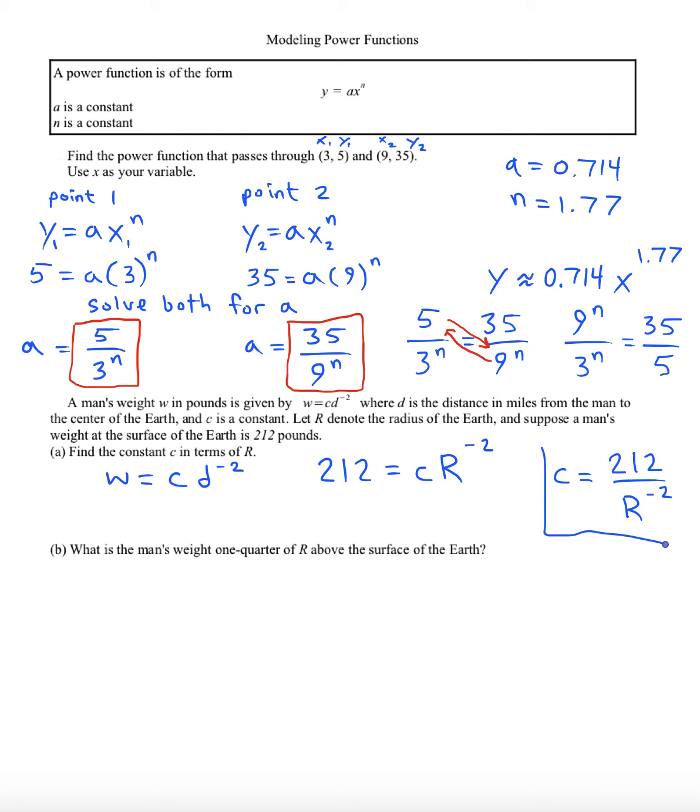Looks like c is 212 over r to the negative 2, which would be the same as 212 r squared if we bring it up.